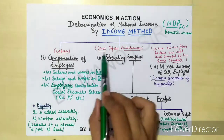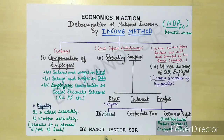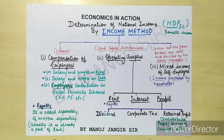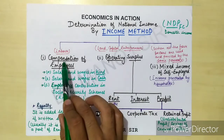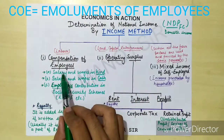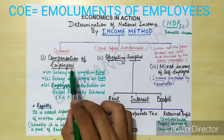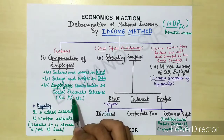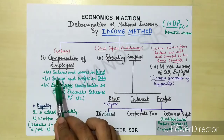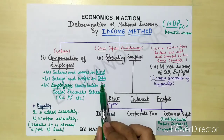Labor is separated from the other three factors because when all four factors are used and provided by the same person, income is categorized differently. From labor, what we get in return is compensation of employees. If compensation of employees is not given directly, then we use its sub-items: salary and wages in kind, and salary and wages in cash.